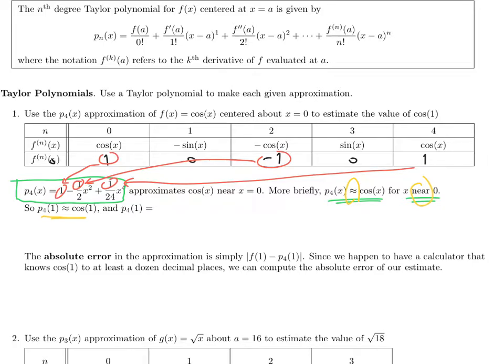And this is why we like this kind of estimate, because plugging one into the polynomial is super easy. Just plugging one in for x in the polynomial would give us this. And so that is one minus a half plus one over 24. And that's just 13 over 24. So 13 over 24 is a good approximation of cosine of one. And put that in my calculator at 0.45416 repeating.